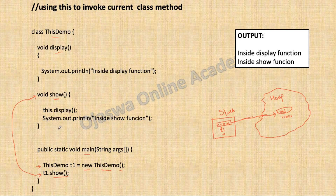If we want to call a non-static method from a static context — the main method is static — we need to call the method using an object. But if we want to call a non-static method from a non-static method, it is not mandatory to create an object.